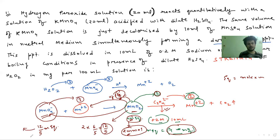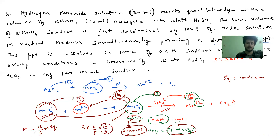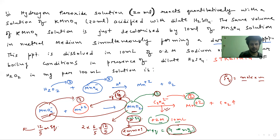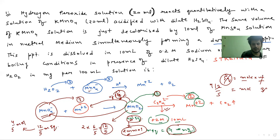How many moles of MnO4- will there be? We know that equivalents equal moles into n-factor, and n-factor is 3. Equivalents are 12 by 5, so moles will be 4 by 5. That means 4 by 5 moles of MnO4- are used here.